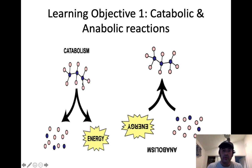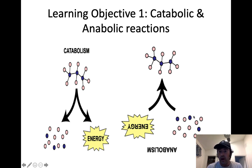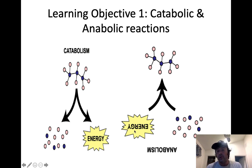The energy from catabolic reactions is used in what are called anabolic reactions. Anabolic reactions are where we take smaller particles, atoms, or molecules and we knit them together with bonds — oftentimes covalent bonds — to form larger, more complex molecules. These reactions don't release energy; they absorb energy.